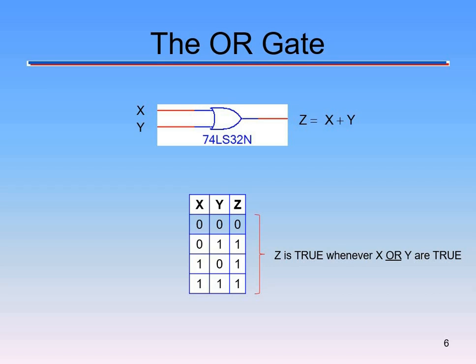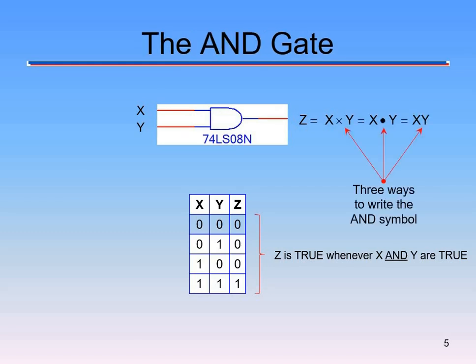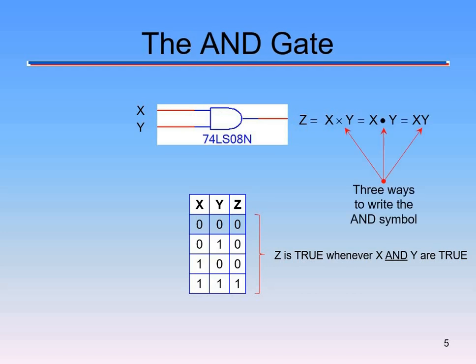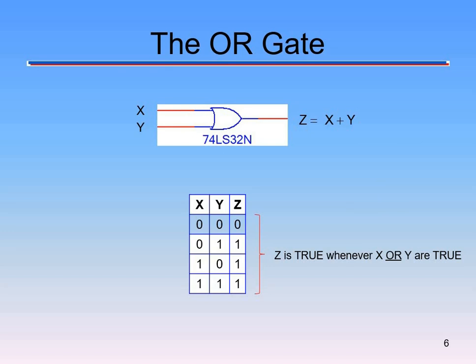Notice how the symbols are drawn: the AND gate is flat on one side and curves around; the OR gate has an arc in the middle and comes to a point. When we look at schematics we need to know these symbols. The chip number for the OR gate is 74LS32N — the important part is the 32. Just as the 08 is an AND gate, the 32 is an OR gate. You need to remember that.